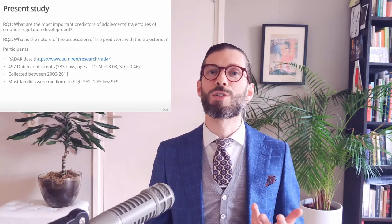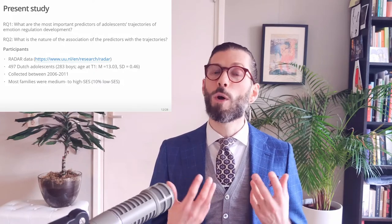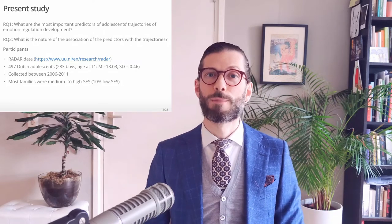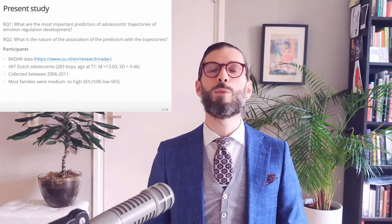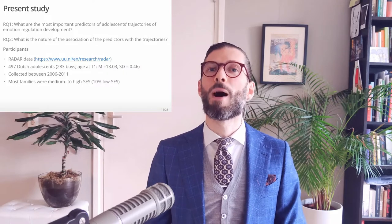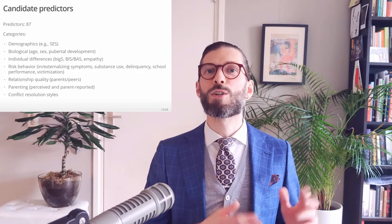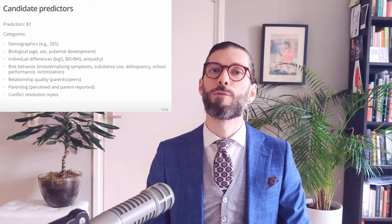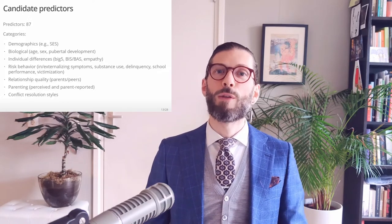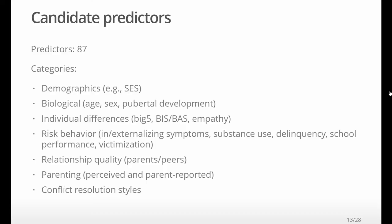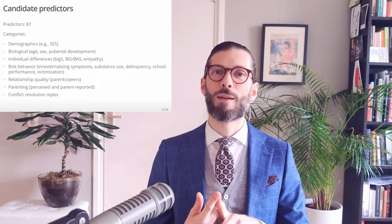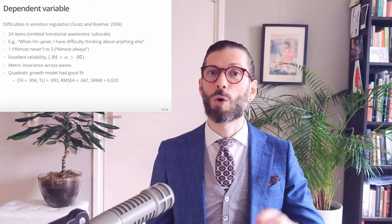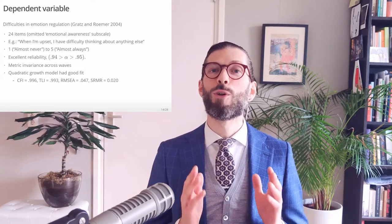The research questions in the present study are, first of all, what are the most important predictors of adolescents' trajectories of difficulties in emotion regulation? And second of all, what is the nature of the association of these important predictors with the trajectories? Our participants originated from the longitudinal RADAR study, which consists of 497 Dutch families of adolescents who were about 13 at the first time of measurement. Based on the text mining systematic review I showed previously, we identified 87 potentially relevant predictors in the dataset. Some of these were composite scales. The measures roughly fell into these categories: demographic predictors, biological predictors, individual differences such as personality, BIS-BAS and empathy, many indicators of risk behavior, indicators of relationship quality with parents and best friends, both self-reported and parent-reported parenting scales, and conflict resolution styles with parents and best friend.